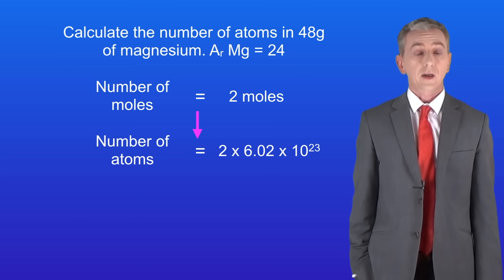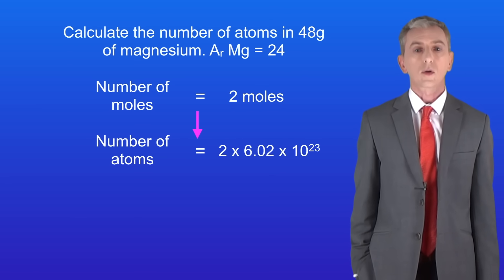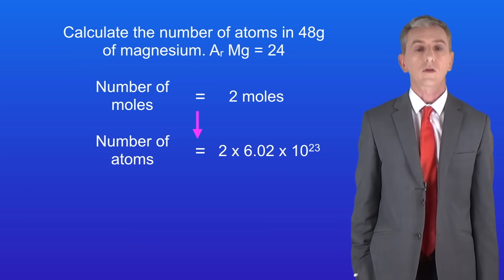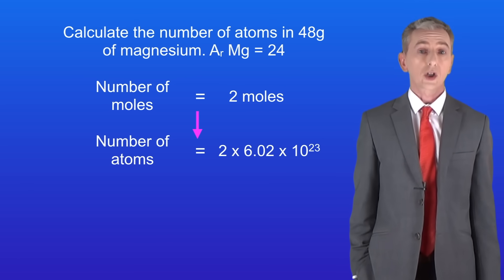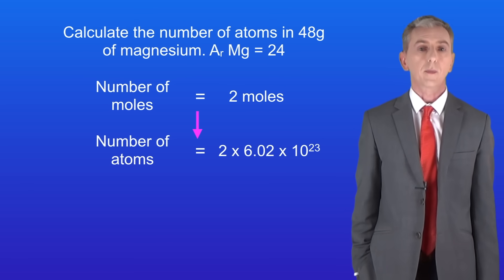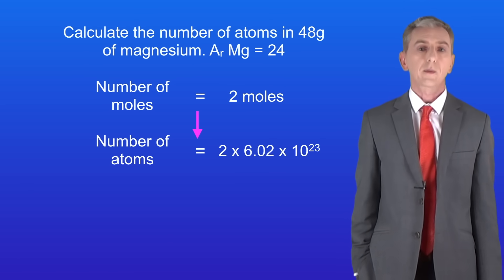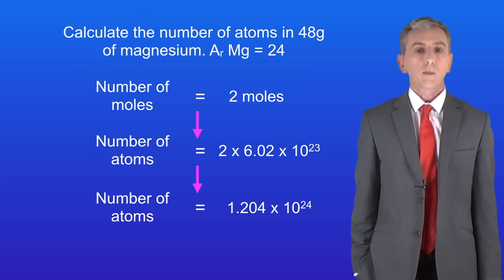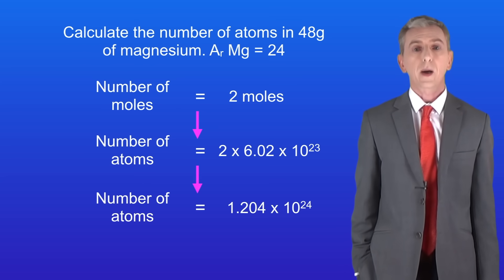Remember that one mole is Avogadro's constant, which is 6.02 times 10 to the power of 23. Therefore in two moles of magnesium the total number of atoms is Avogadro's constant multiplied by 2, giving us a final answer of 1.204 times 10 to the power of 24 atoms.